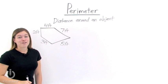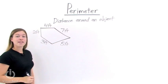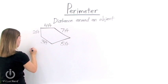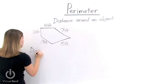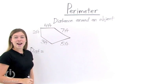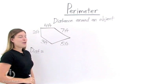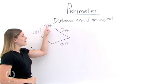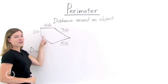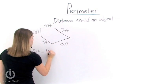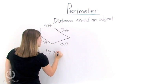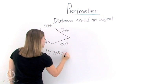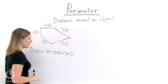Now we need to find the perimeter. So we want to find the distance around this object. To do that, we just want to take each one of the sides and add them up. So let's start at this side and work clockwise. We have 4 plus 7 plus 5 plus 3 plus 2.